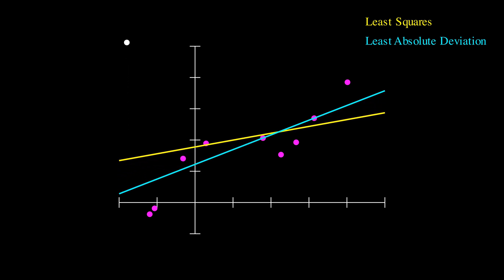Wow! The least squares line changes a lot, but the least absolute deviation line barely even moves. This is because large errors are magnified in the least squares objective, so the least squares line is sensitive to outliers. When we decrease the y-value of the outlier point, the two lines start to become more similar again.